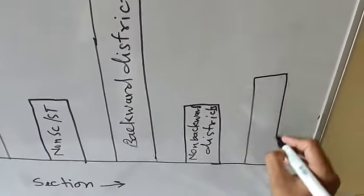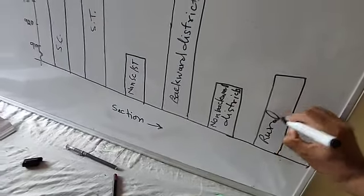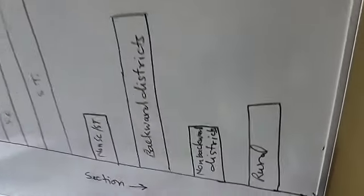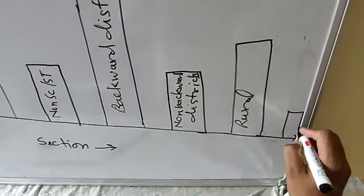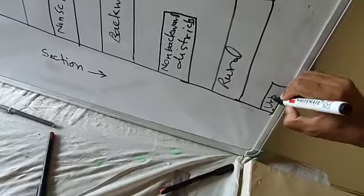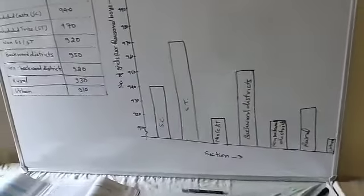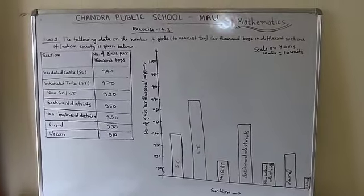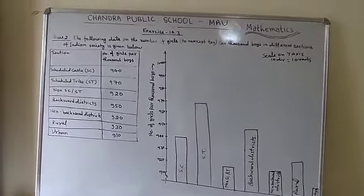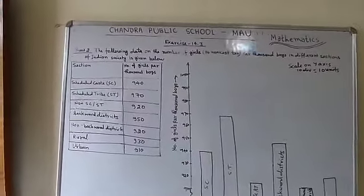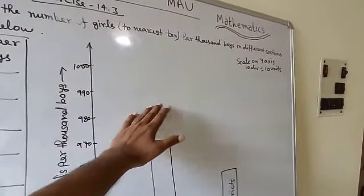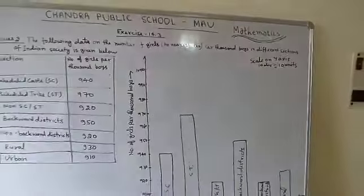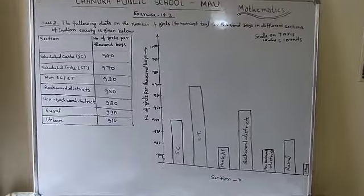For Rural the value is 930, so leave a space, draw the bar up to 930, and write Rural below it. For Urban the value is 910, so draw the bar up to 910 height and write Urban. That is the complete solution of question number 2, first part. Paste the graph sheet just below the table.